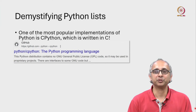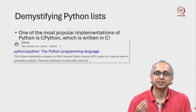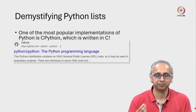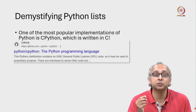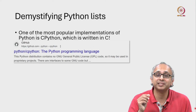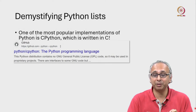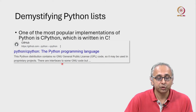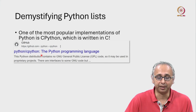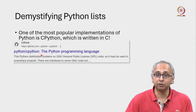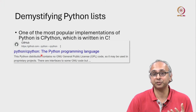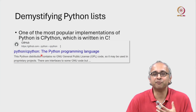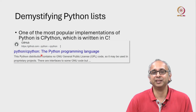The last topic I want to talk about is Python lists. It turns out there are many implementations of Python, and the most popular one is called CPython, where everything is implemented in C. This is the official GitHub repository — you can search for CPython — and in it you will find C code. That C code is going to be a little bit hard to read; it uses many advanced concepts in C.